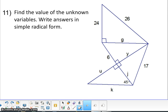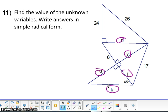For 11, push pause and find the values of G, Y, J, U, and K using Pythagorean triples and our new special right triangles. So by using a triple, we know that G is going to be 10.